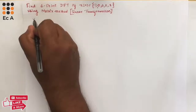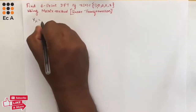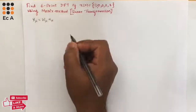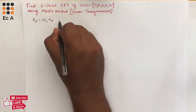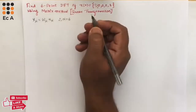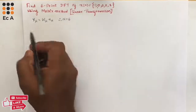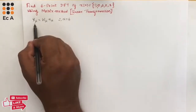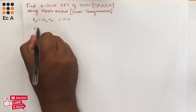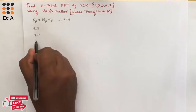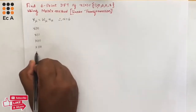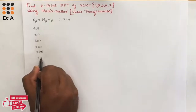we can use the matrix formula: X[k] = WN · x[n]. Here, they have given a 6-point DFT, therefore let us take N equal to 6. Now let us write the matrix for this. First we need to write a 6×1 matrix, so we will write X(0), X(1), X(2), X(3), X(4) and X(5).